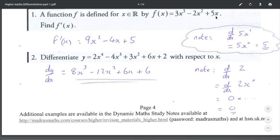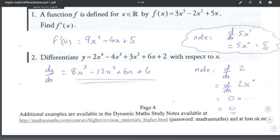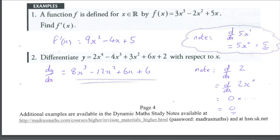Now differentiate 5x. Let's think about this: 5x is 5x to the power 1. Let's bring the power to the front as 1 times 5 which is 5. Reduce the power would be x to the 0. x to the 0 is just 1. So we've just got 5 multiplied by 1 which is just 5.